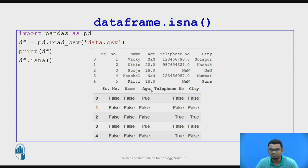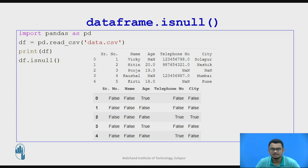You can see that the age of Wiki has been marked as True, which tells us it is a missing value. Similarly, the age of Kaushal is also marked as True — so it is a missing value. This is how the isna function helps us detect missing values. The isnull function also works on similar lines; when we run isnull we get a similar output where True indicates the value is missing in the data file.